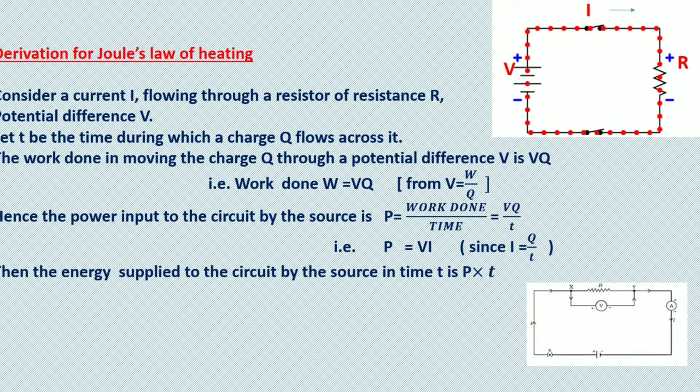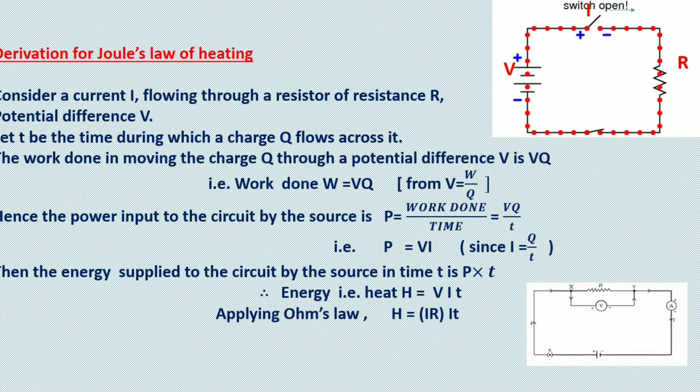The energy supplied to the circuit by the source in time t is given by the product of power and time. Substituting for power from the previous equation as VI, the heat energy produced in the resistor is given by H = VIt.